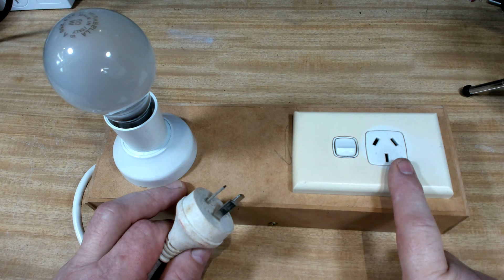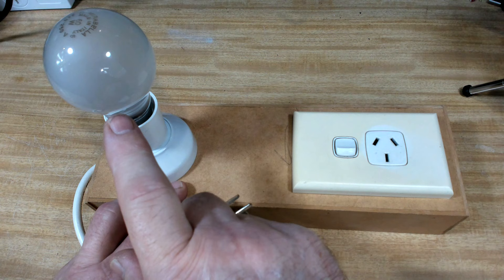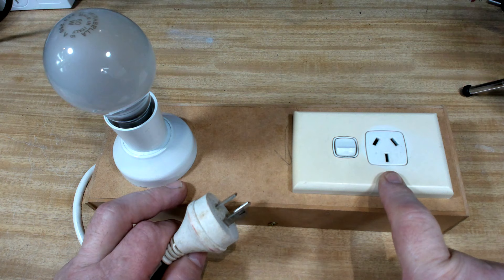So if you've got a dead short in your radio, this light will come on full intensity straight away. The amount of current left to go through your radio is virtually none and your radio is protected. If it's got a partial short, it'll come on bright, but not full brightness. And once again, it'll limit the current through the partial short in your radio and protect it.